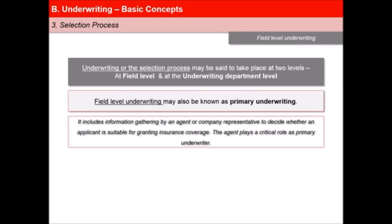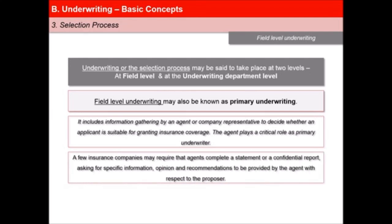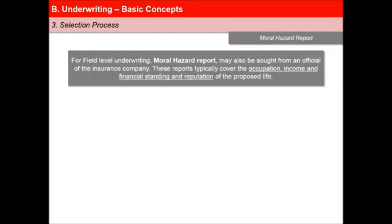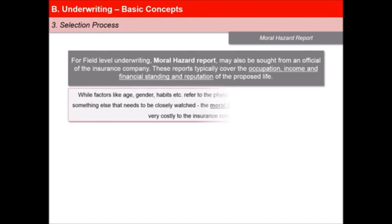The agent plays a critical role as primary underwriter. A few insurance companies may require agents to complete a statement or a confidential report asking for specific information, opinion and recommendations to be provided by the agent with respect to the proposer. For field level underwriting, moral hazard report may also be sought from an official of the insurance company. These reports typically cover the occupation, income, financial standing and reputation of the proposed life.